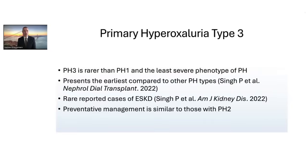Primary hyperoxaluria type 3 is also more rare than PH1 and is the least severe phenotype. It presents earliest compared to other PH types, usually with calcium oxalate stone disease in the pediatric years. Cases of nephrocalcinosis and kidney disease are fairly rare compared to PH1 and PH2. Preventative management is similar to PH2, including robust fluid intake and crystallization inhibitors.